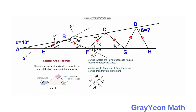Next, we extend segment FC. Extending segment FC gives us an exterior angle that measures 4 alpha plus 4 alpha, which is 8 alpha. Subtracting the vertical angle — which is 3 alpha by the vertical angle theorem, being vertical with angle BCF — gives us 8 alpha minus 3 alpha. So this interior angle should be 5 alpha.